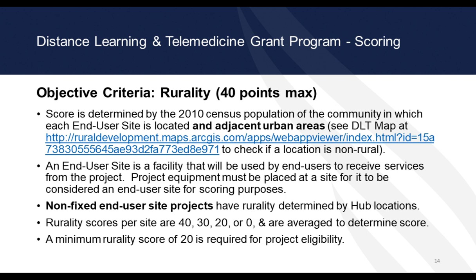The rurality worksheet for Window 2 has an additional column asking whether the site is contiguous to an urban area with a population over 50,000, and if so, what's the name of that community. Remember: a minimum rurality score of 20, averaging all end user sites, is required to move forward. If your score is under 20, there's no point in doing the rest of the work. Note also that non-fixed end user site projects — where services are delivered to individuals in their homes — have rurality determined by hub locations.